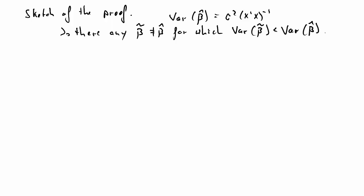So, here's a sketch of the proof. Everything turns around the variance of the OLS-estimator beta hat, which we have established to be sigma squared times x'x inverse. So, the question is, is there any alternative estimator beta tilde that is not equal to beta hat,